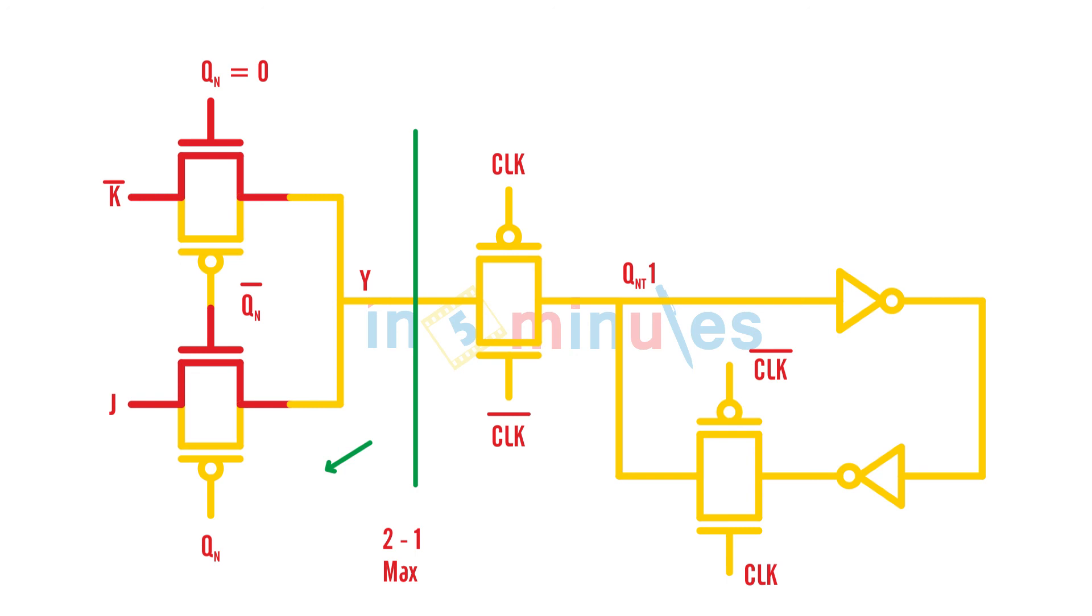QN equal to 1 means QN bar is equal to 0. That means this transistor will be on and will pass K bar at the output. Vice versa, when QN is equal to 0, this would be on along with this transistor and will pass J.